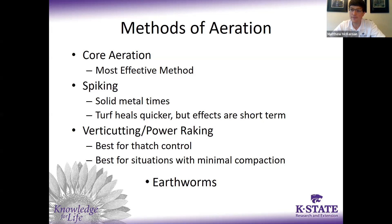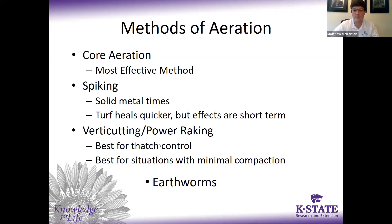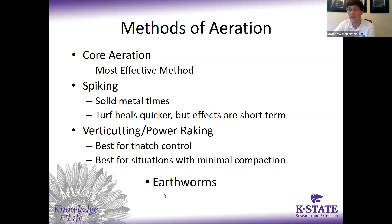Core aeration is going to be the most effective method — typically a machine that pulls little plugs of soil out of the ground and leaves them on the surface. Spiking uses a solid tine, like the tines on a pitchfork, that basically just punch holes in the ground — this does less damage to grass but usually has a shorter term effect on lawn health. Verticutting and power raking help aerate to some extent but typically not as deep — these help control thatch and can help get rid of some minimal surface compaction. If you don't want to aerate at all, earthworms are nature's core aerators and do a lot for soil health. As much as we can improve conditions for earthworms, that also helps aerate our grass over time.